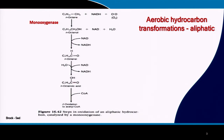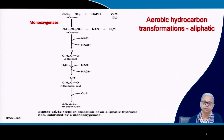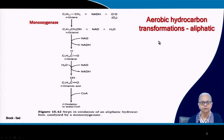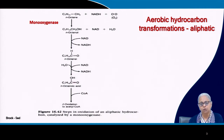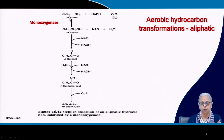In the previous lecture I stopped with the thumb rules that allow us to estimate whether a particular compound is going to be biodegraded or not. Aerobic aliphatic hydrocarbons can be transformed under aerobic conditions but not under anaerobic conditions. The reason is the very first step — beta oxidation of the aliphatic compound — which is catalyzed by an enzyme called monooxygenase. This beta oxidation step is not possible under anaerobic conditions, so a saturated compound like N-octane cannot be biodegraded anaerobically.